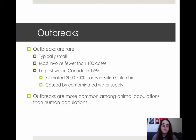Outbreaks of toxoplasmosis are fairly rare, and when they do happen, they're usually on the smaller side. Most of the ones found had fewer than 100 cases, and a lot of them had less than 50. The largest was in Canada in 1995, where an estimated 3,000 to 7,000 cases were reported in British Columbia, caused by a contaminated water supply. Most of the outbreaks found were actually among animal populations and not human populations.